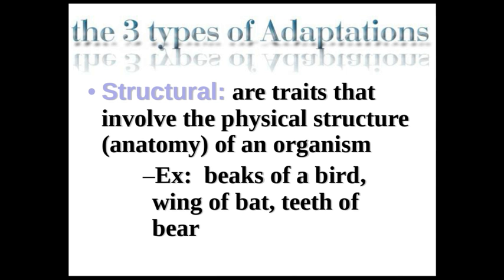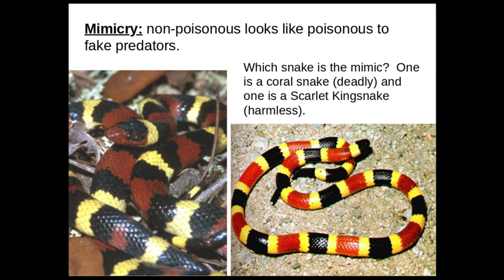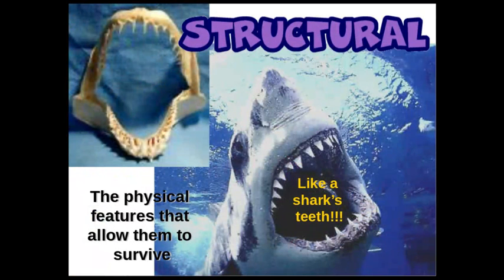So there are three different types. There's structural — these are traits that involve the physical structure of an organism. It could be like thorns on a rosebush, beaks of a bird, teeth of a bear, teeth of a shark — some kind of structural thing. Like we have an opposable thumb with humans, that type of stuff. And mimicry also falls under structural. Mimicry is when non-poisonous organisms look like poisonous organisms. A great example is the coral snake and the king snake. The coral snake is deadly to humans; the king snake is harmless — its venom is not venomous. Physical features that allow them to survive — it's how they eat, how they get around, that type of stuff.